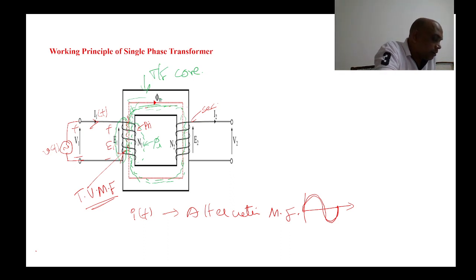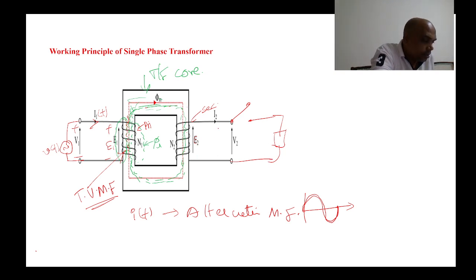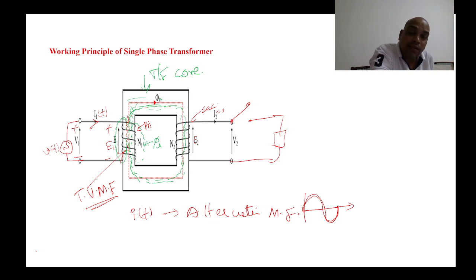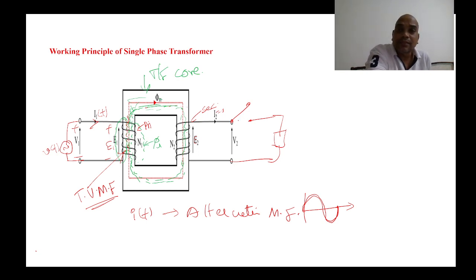When the flux cuts the secondary coil, EMF is induced there. But under no-load condition, the secondary circuit is open, so I2 equals zero. When there is no current passing through the secondary coil, no magnetic field is developed in the secondary coil. A magnetic field in the secondary only exists if current flows through it, which is not possible under no-load condition.